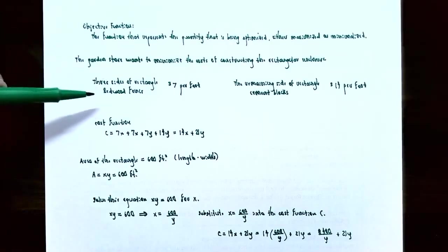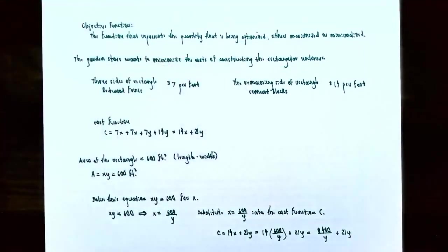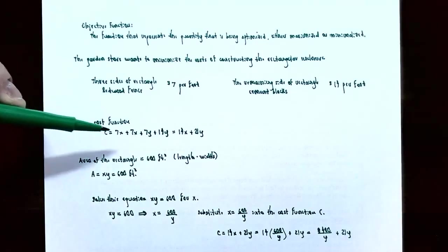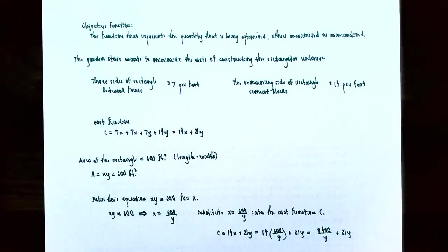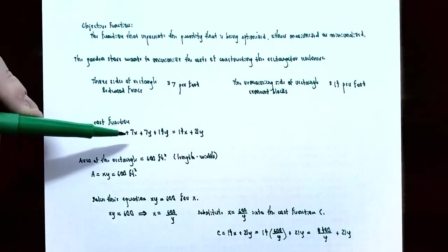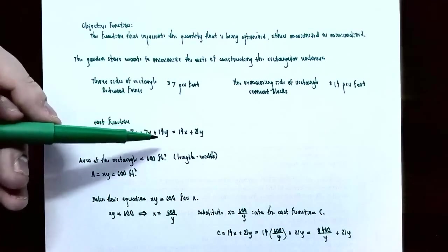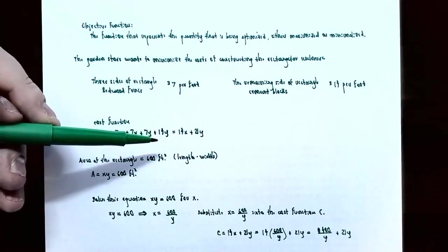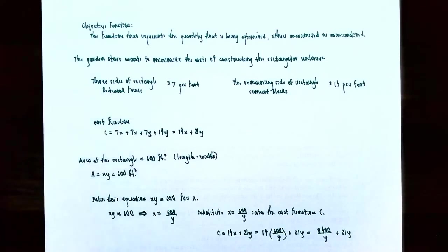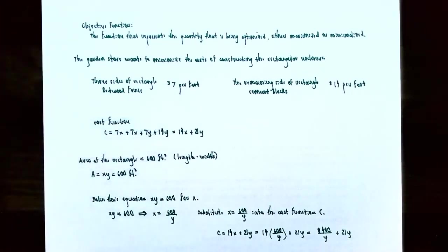Three sides were redwood fence at $7 per foot, and the remaining side used cement blocks at $14 per foot. The cost function C equals 7x (one width) plus 7x (other width) plus 7y (one length using redwood) plus 14y (one length using cement block). Simplifying: 7x + 7x = 14x, and 7y + 14y = 21y. So C = 14x + 21y.